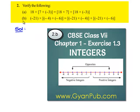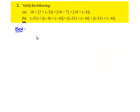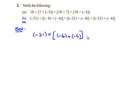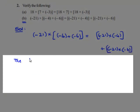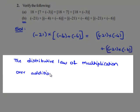We'll see the second bit of the second problem: negative 21 multiplied by negative 4 plus negative 6. This gives negative 21 multiplied by negative 4, plus negative 21 multiplied by negative 6, using the distributive law of multiplication over addition.